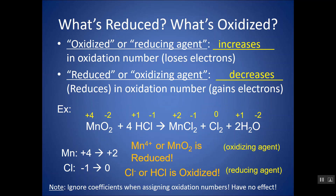You might see these terms, which are a bit outdated but still worth knowing. The thing that is reduced causes oxidation to happen, so we call it the oxidizing agent. The thing that is oxidized causes reduction to happen, so we call that the reducing agent. For questions that ask about agents, just reverse your answer.